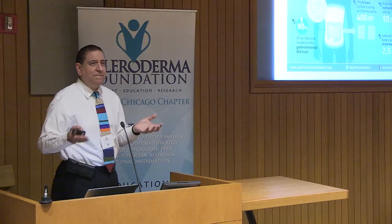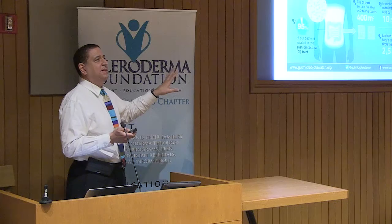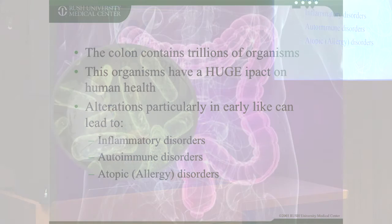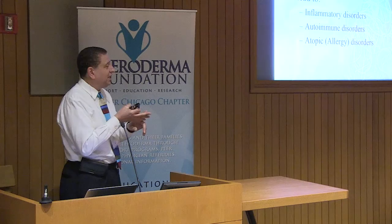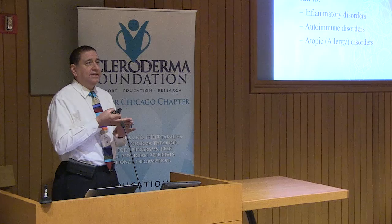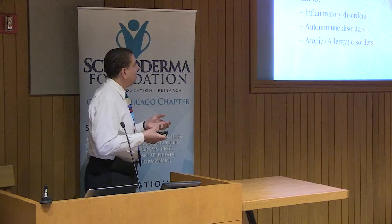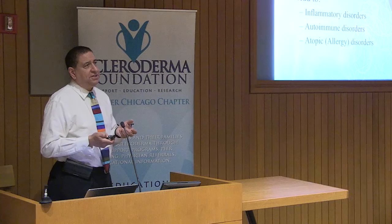These organisms have a huge impact on our health. That can be altered through antibiotics, through chemicals in our diet, or through artificial sugars. When you eat an artificial sugar in a diet soda, those sugars don't get absorbed — they go down and change the bacteria. The ones that like that sugar will outgrow the ones that don't, giving you an alteration that may or may not be favorable. Inflammatory disorders, autoimmune disorders like scleroderma, and allergy disorders have been suggested as events that may result from alterations in the microbiota.